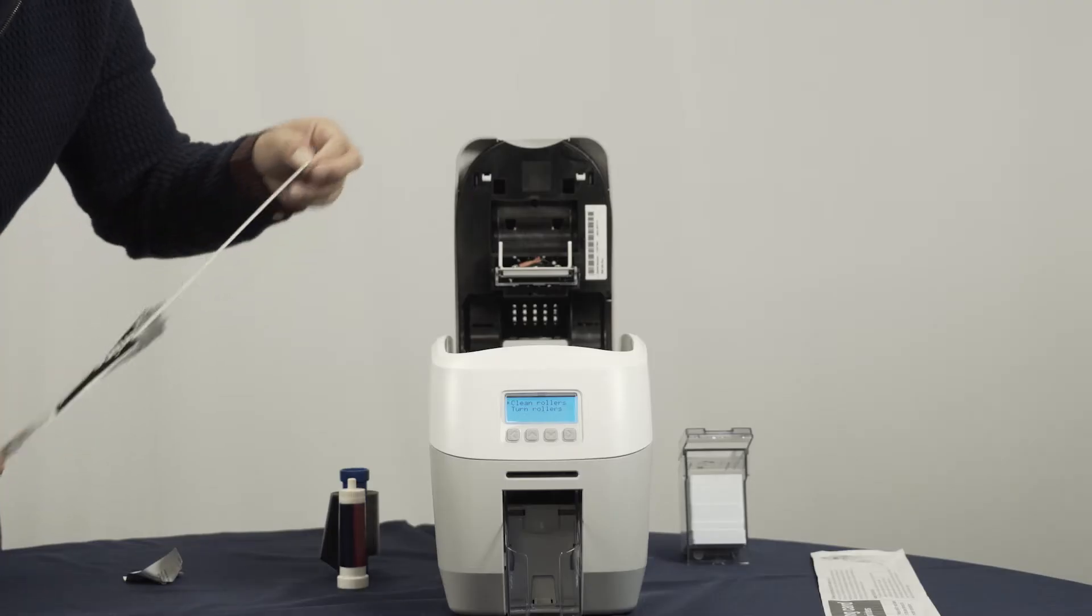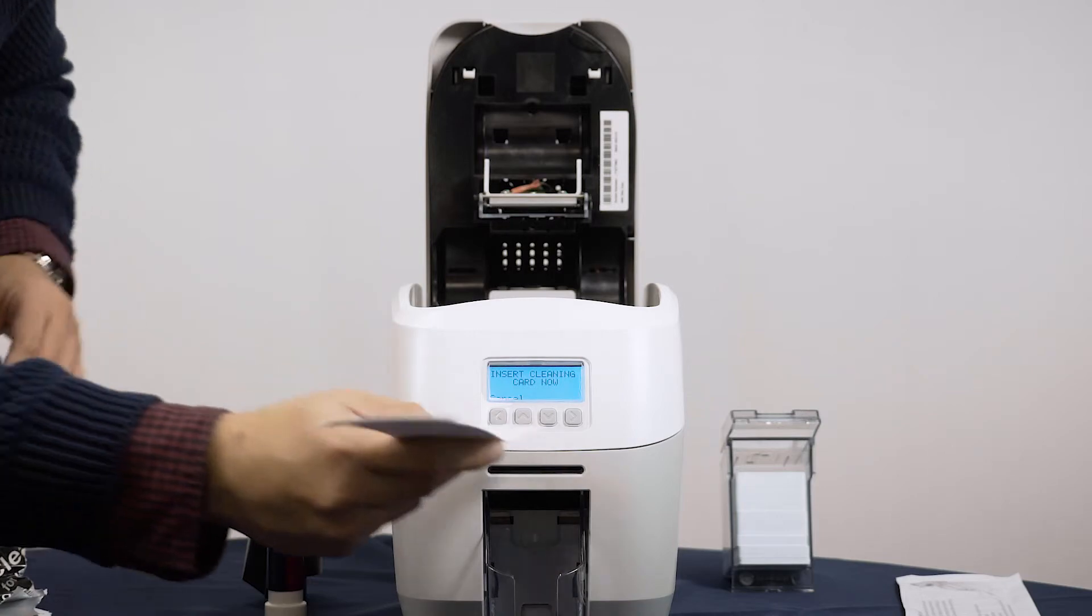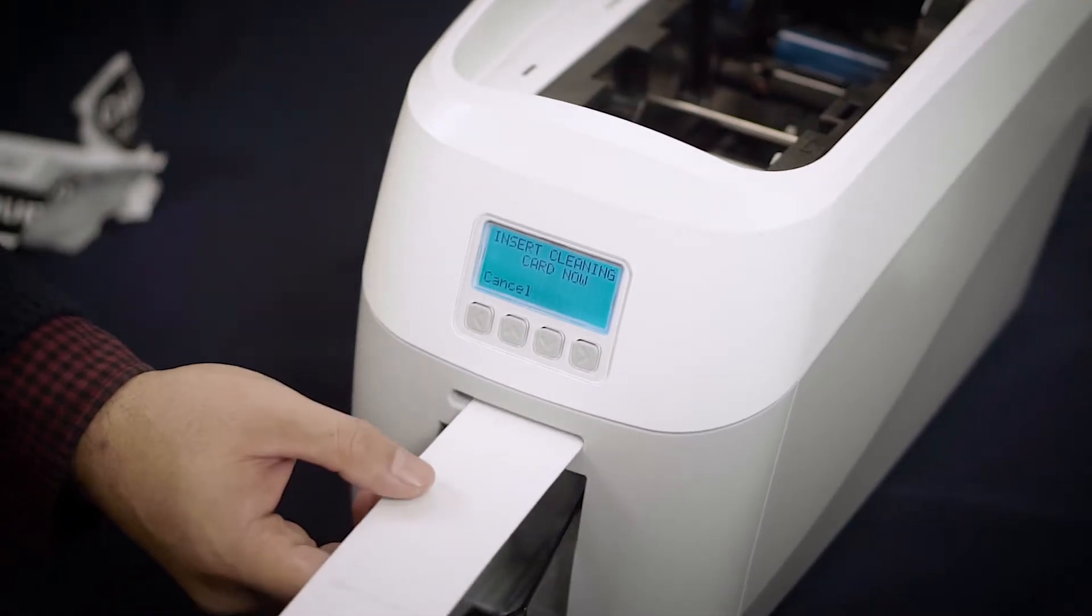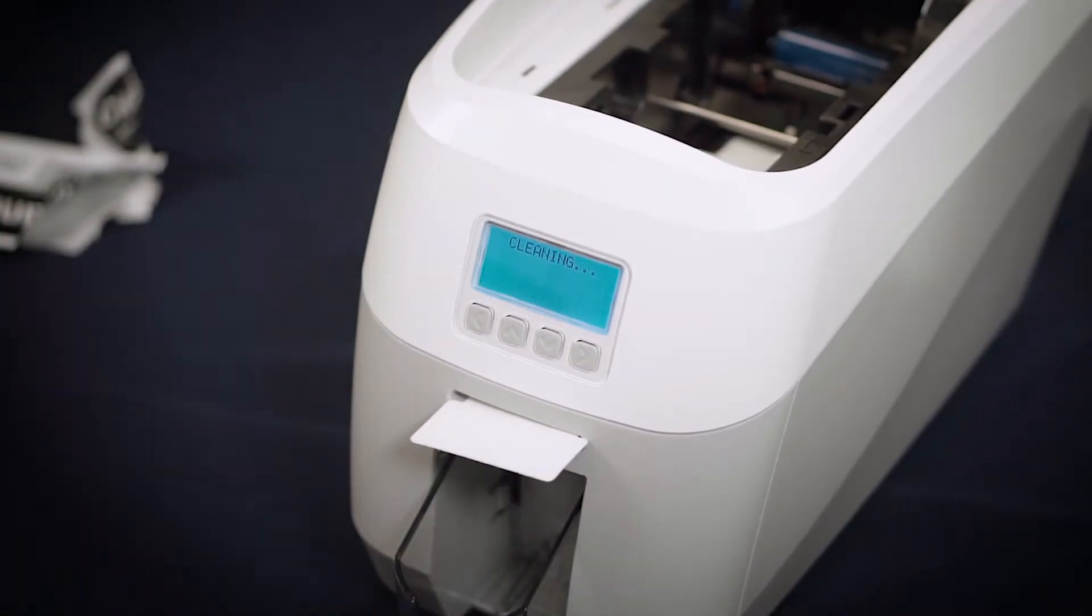Take a cleaning card and remove the packaging. Insert the card, narrow end first, through the slot under the display at the front of the printer. The rollers will pull the card inwards and the display will say Cleaning.